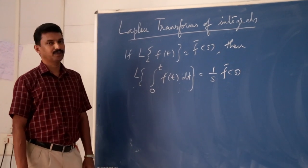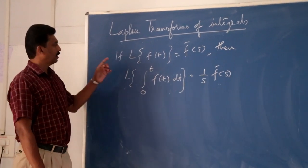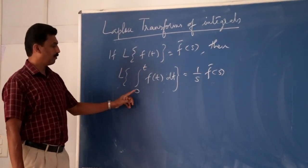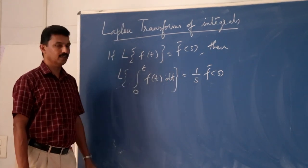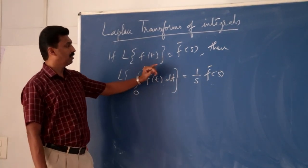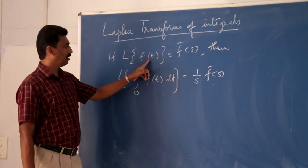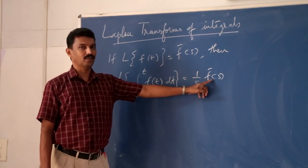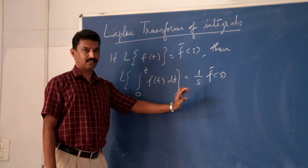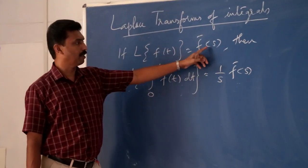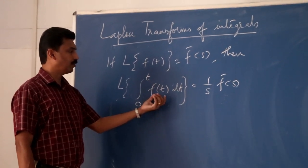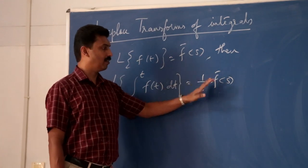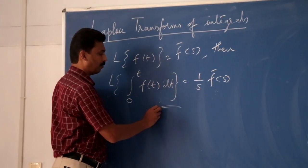The next section is Laplace transform of integrals. Statement: if the Laplace transform of f(t) is F̄(s), then the Laplace transform of the integral from 0 to t of f(t) dt is equal to (1/s)·F̄(s). That is, if we know the Laplace transform F̄(s) of f(t), we can find the Laplace transform of the integral by dividing the transform of f(t) by s.